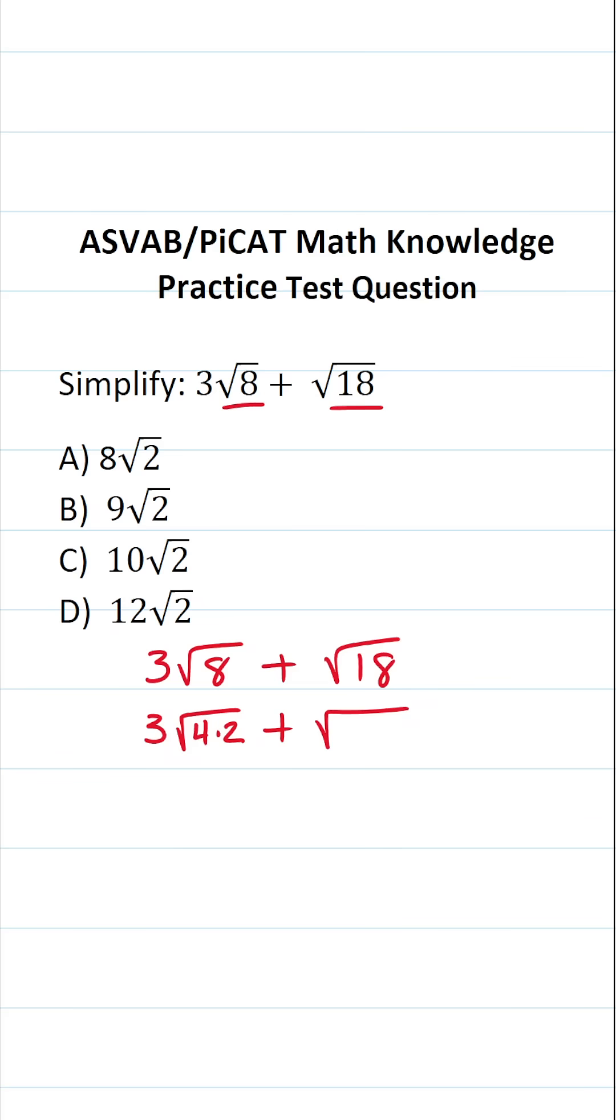And how am I going to rewrite the square root of 18? Well, that's simply going to be 9 times 2, and you may recall that 9 is a perfect square. So one of the laws of radicals you need to know for this test is if you have the square root of a times b, you can rewrite that to be the square root of a times the square root of b.